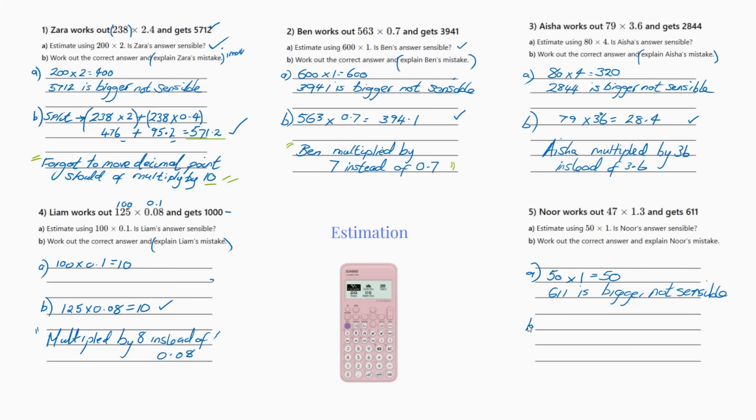And B, work out the correct answer and explain Noah's mistake. So we have 47 times 1.3, pop in the calculator and you will get 61.1. So now let's explain Noah's mistake.